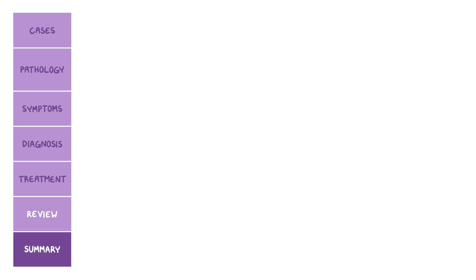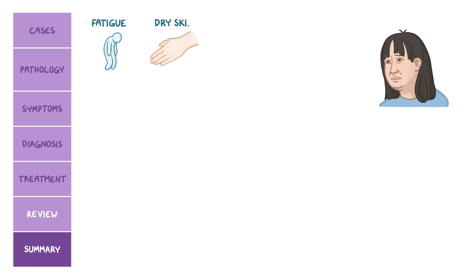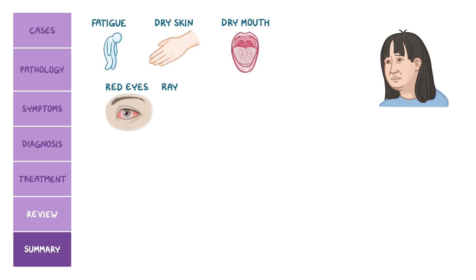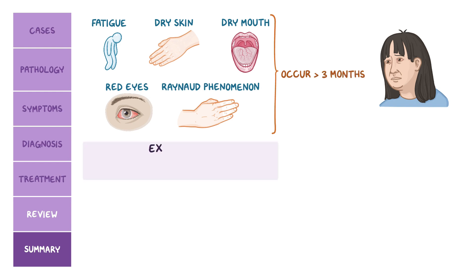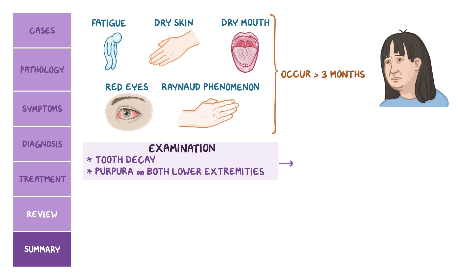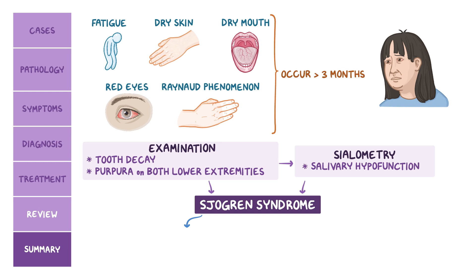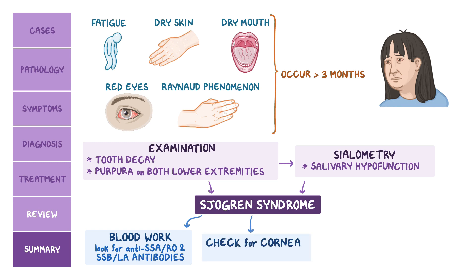Now back to our case. Patricia came in with symptoms of fatigue, dry skin, dry mouth, red eyes, and Raynaud's phenomenon — these symptoms are highly suggestive of Sjogren's syndrome, especially since they occurred for more than three months. Examination revealed signs of tooth decay and purpura on both lower extremities, which also fits the diagnosis. Sialometry detected salivary hypofunction, and together with her symptoms, should be enough to diagnose Sjogren's syndrome. The next step would be blood work to look for anti-SSA-Rho and anti-SSB-La antibodies and to check for signs of corneal ulceration as well as involvement of the lungs and other organs.